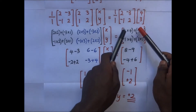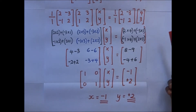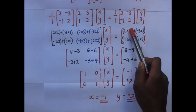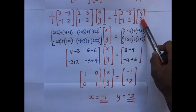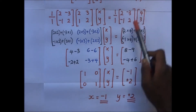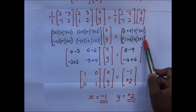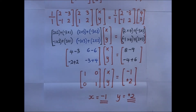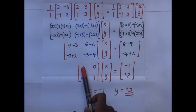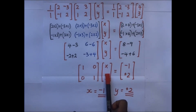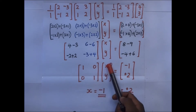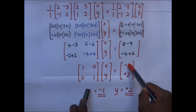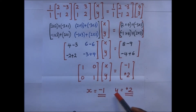On the right side: 2×4 + (-3)×3 gives -1, and (-1)×4 + 2×3 gives 2. So the identity matrix times [x; y] equals [-1; 2]. Since multiplying an identity matrix by any matrix gives that same matrix, we get [x; y] = [-1; 2], meaning x = -1 and y = 2.